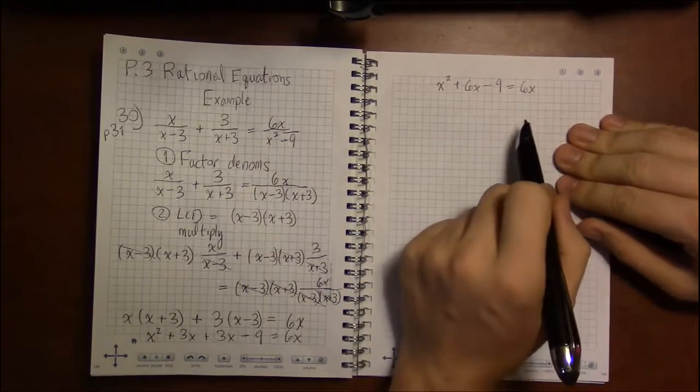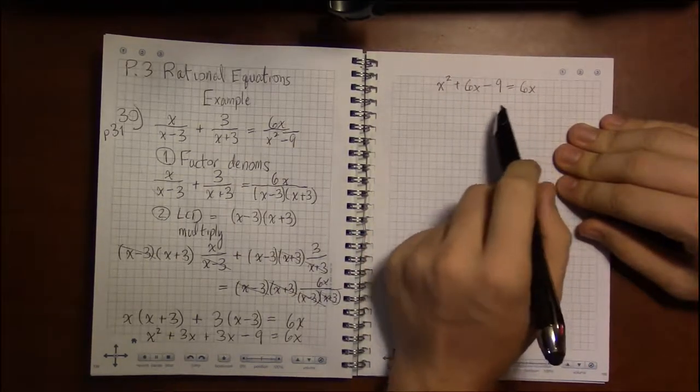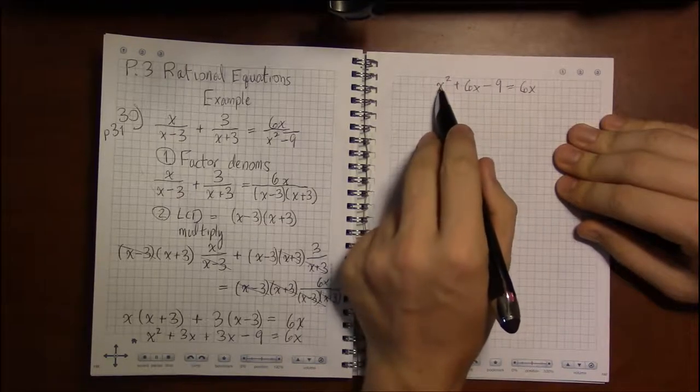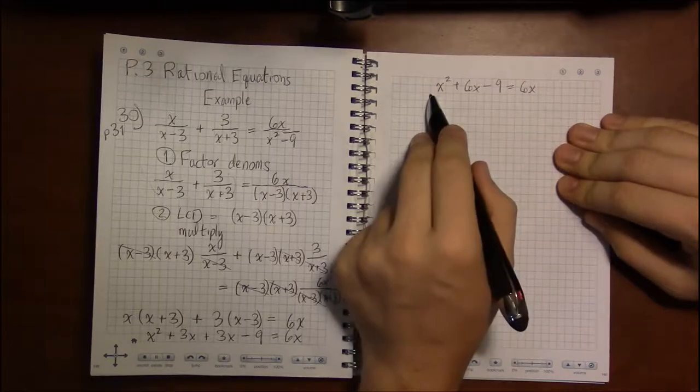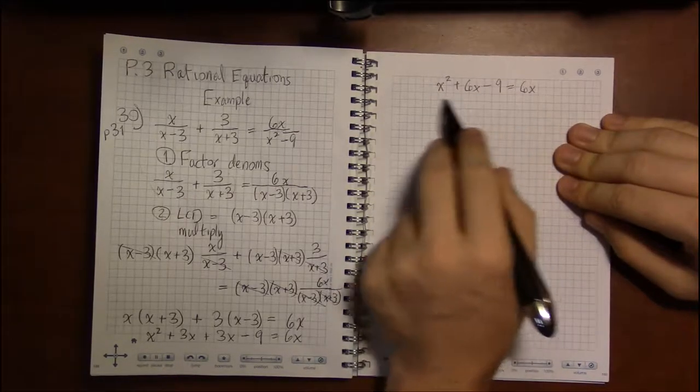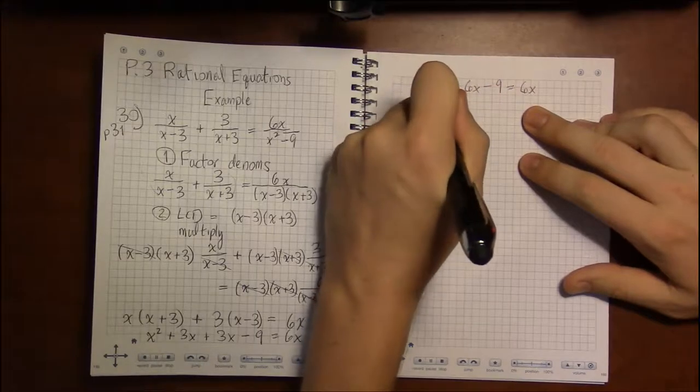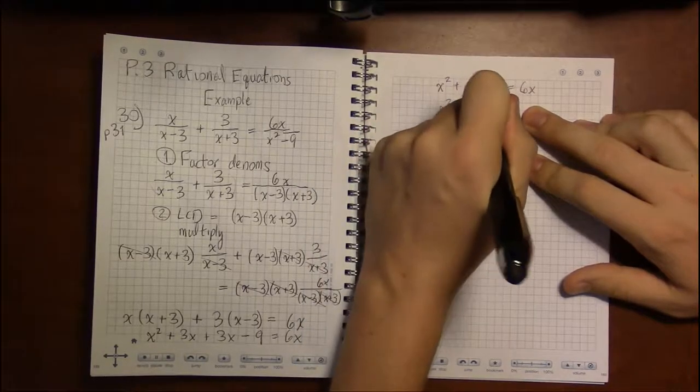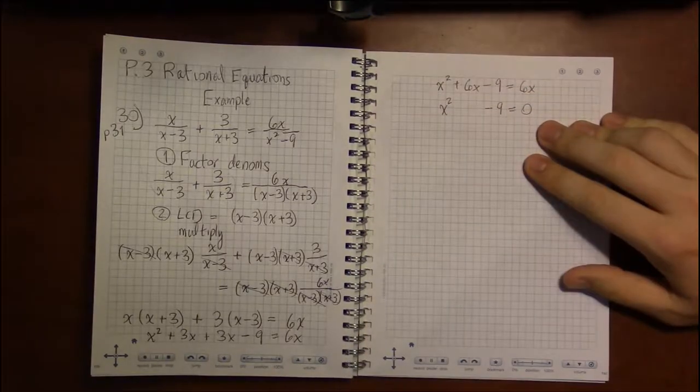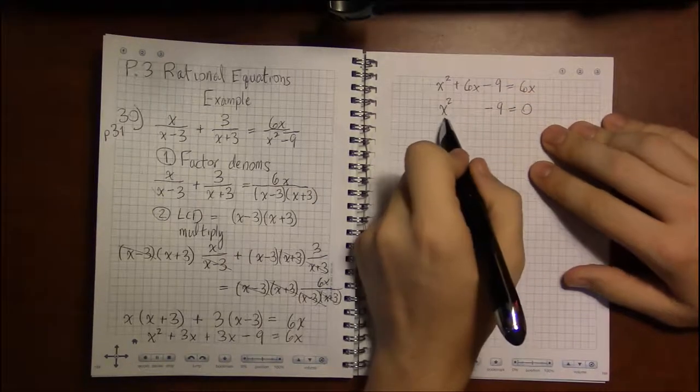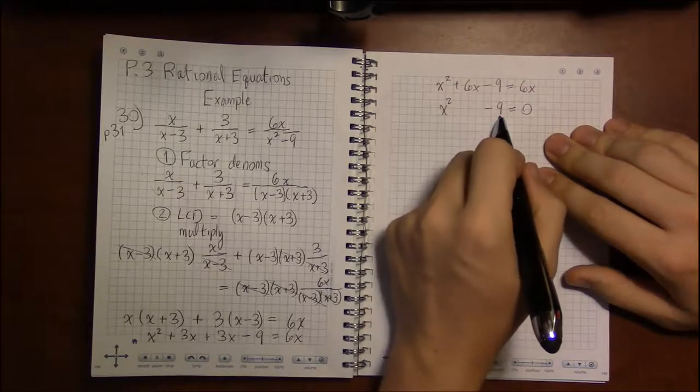So now that this is as simplified as we can get it, x squareds, x's, numbers, quadratic. So get everything to one side, subtract 6x from both sides. That'll actually cancel the 6x's from both sides.